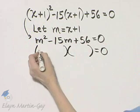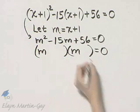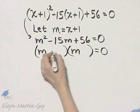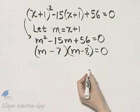That will be m and m, and two factors of 56 whose sum is negative 15, that's negative 7, negative 8.